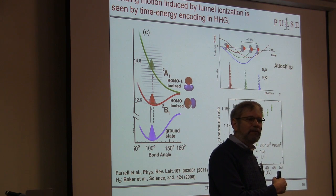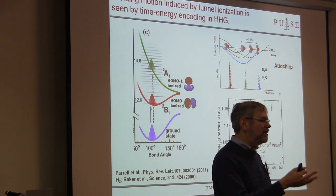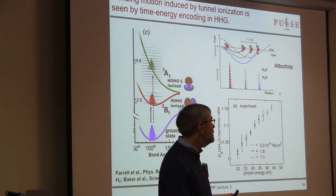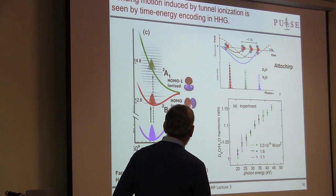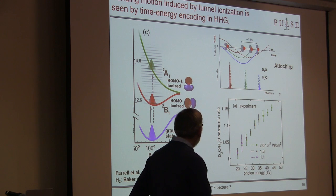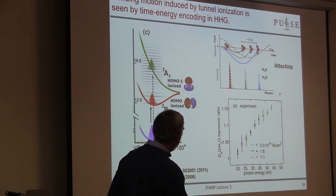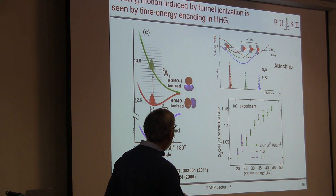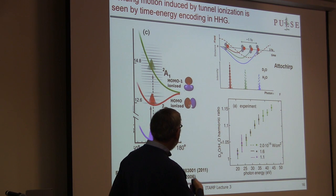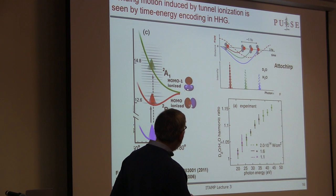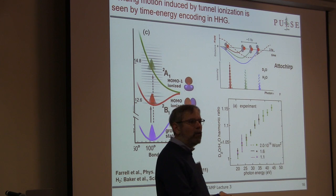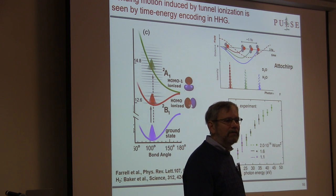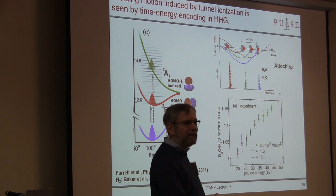I'll come back to electronic orbitals in a minute. Right now let's concentrate on something a little easier — the vibrational and bending motion. Here's water. This is the highest occupied molecular orbital, HOMO, and water sits on either side of the plane of the molecule. The HOMO minus 1, the next most weakly bound occupied orbital, is in the plane of the water. It's the electron that provides the glue that keeps the protons from repelling each other, allowing the water to be bent.